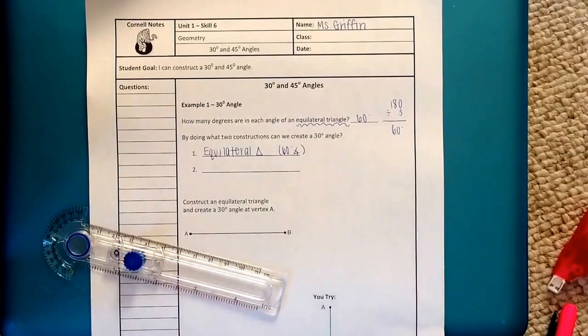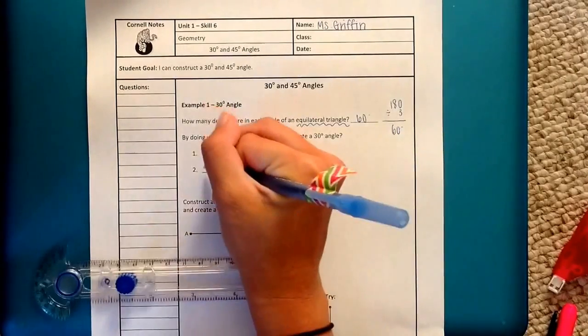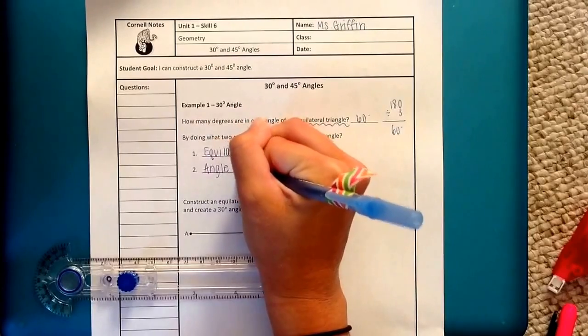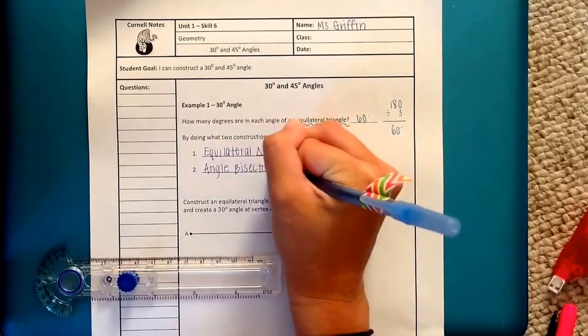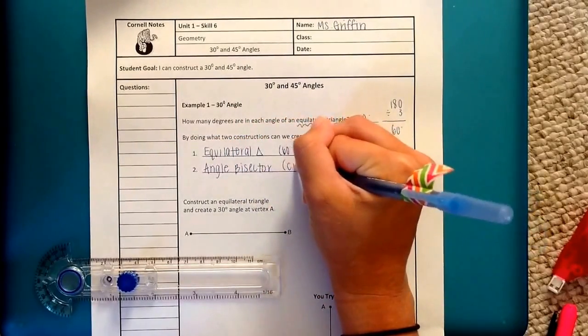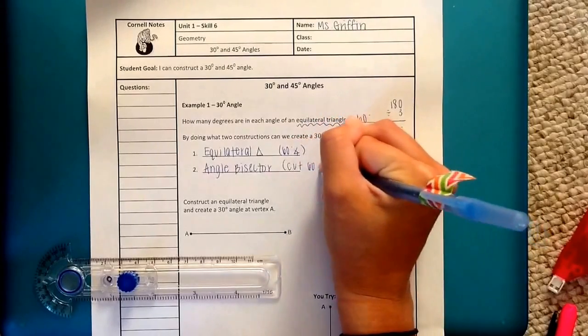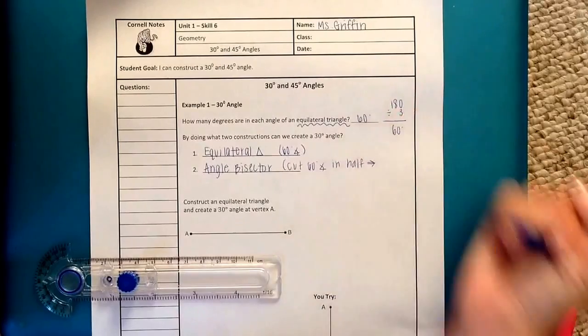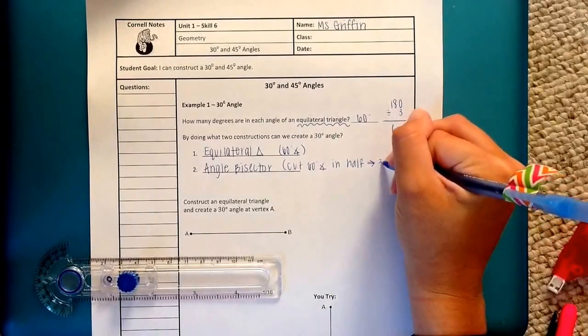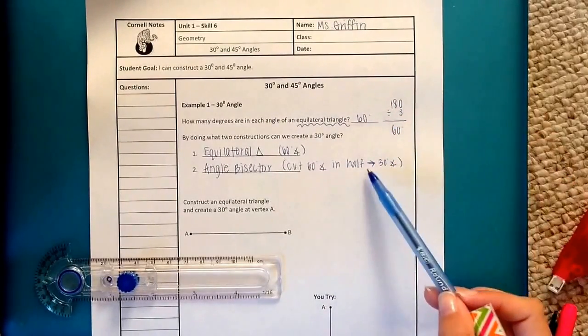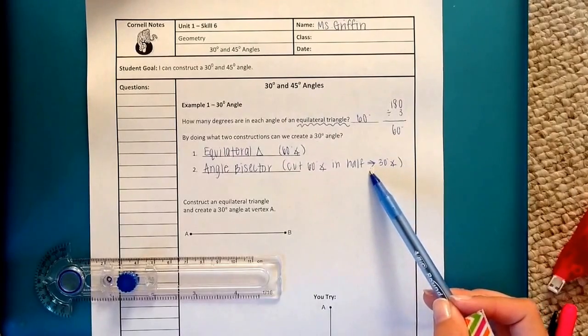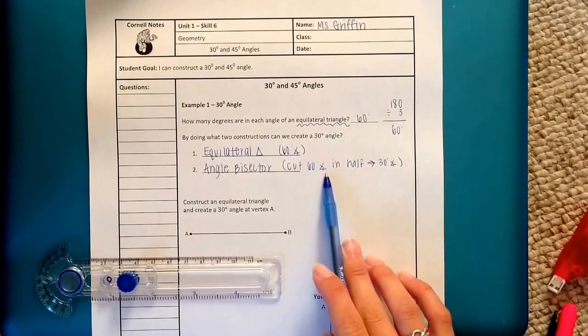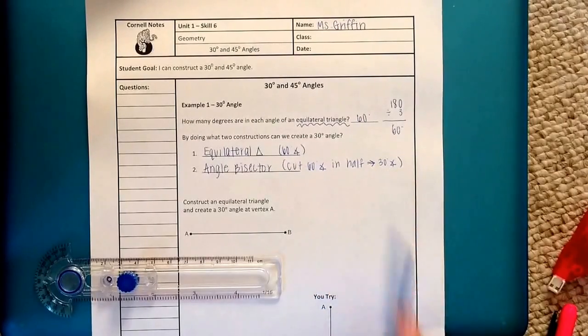From there we know that we can go from 60 to 30 by hopefully you're recognizing cutting it in half. So if we have an angle that needs to be cut in half that means that we need to do the angle bisector construction. And that's going to cut 60 degree angle in half, then we get a 30 degree angle.